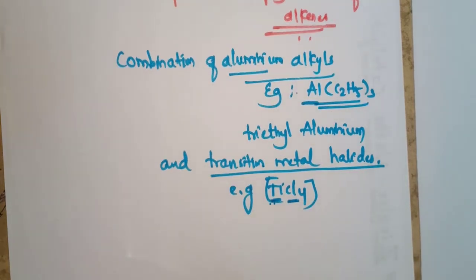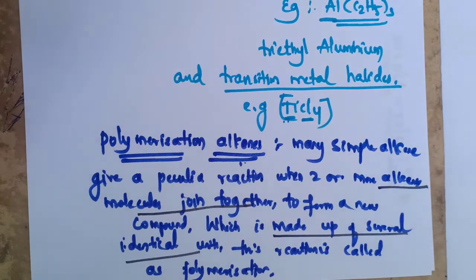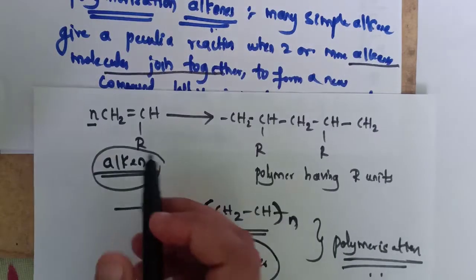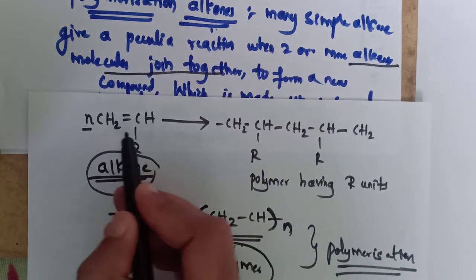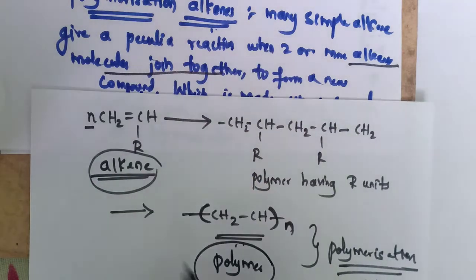The Ziegler-Natta catalyst permits the polymerization of alkenes. In polymerization, many simple alkene molecules join together to form a new compound made up of several identical repeating units. This reaction is called polymerization. The alkene monomer is represented as CH2=CHR, containing a double bond.